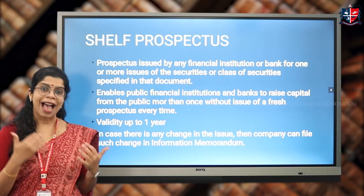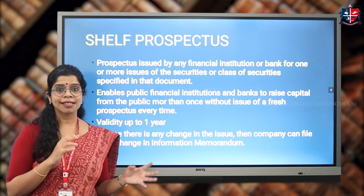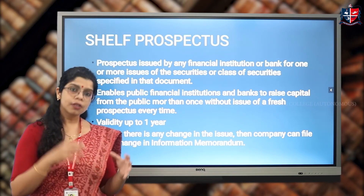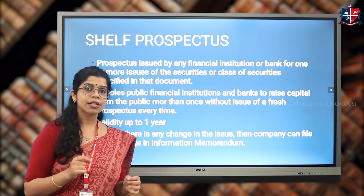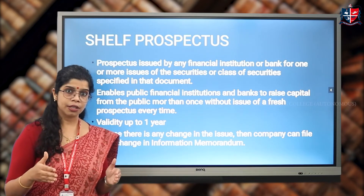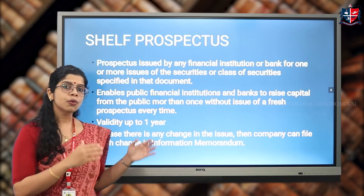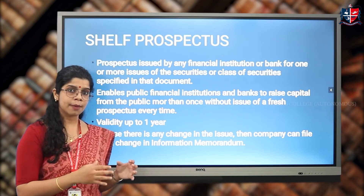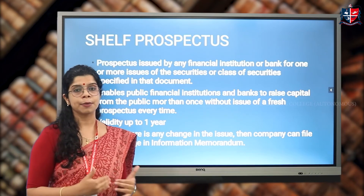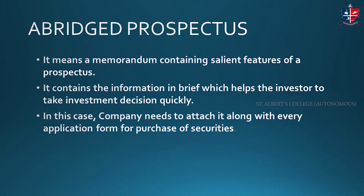If any significant change happens during the one-year validity period of a shelf prospectus, another document called an information memorandum can be prepared. The information memorandum would contain all those changes that occurred over the period of time which are not updated in the shelf prospectus. In case an information memorandum is applicable, the shelf prospectus would not be valid by itself — it would be valid only with the information memorandum attached along with it.